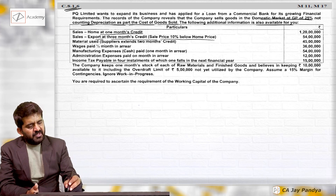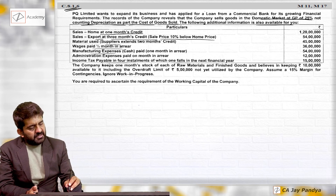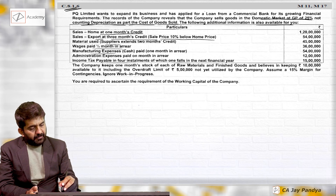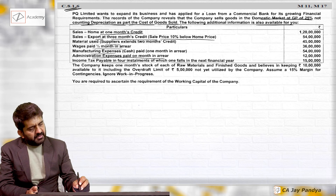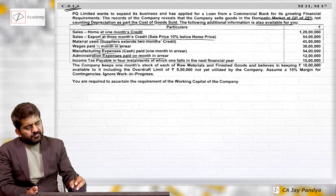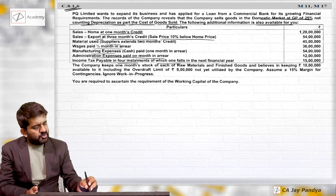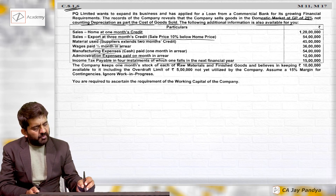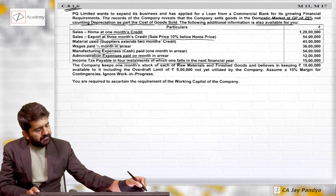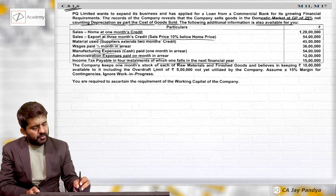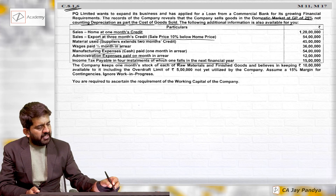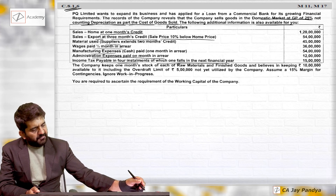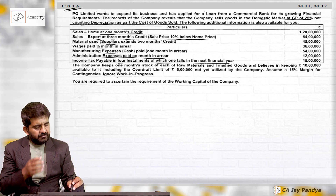Material used, wages paid, manufacturing expenses, and administrative expenses are paid one month in arrears. Income tax is payable in four installments, of which one falls in the next financial year. The company keeps one month stock of each raw material and finished goods, and believes in keeping 10 lakhs available to it, including an overdraft limit of 5 lakhs not yet utilized. Assume a 15 percent margin for contingencies and ignore work in progress.